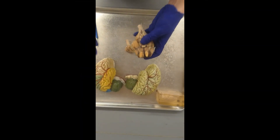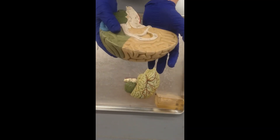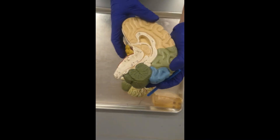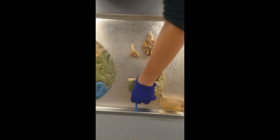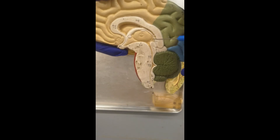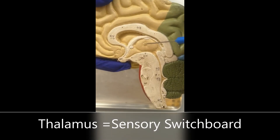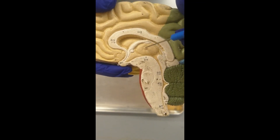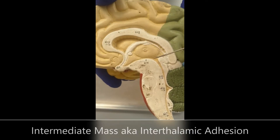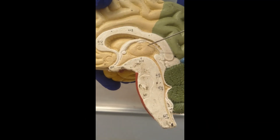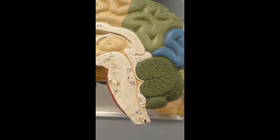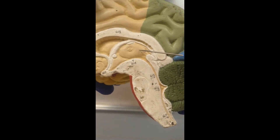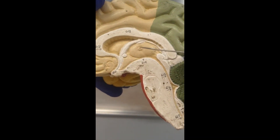That's the external structures of the diencephalon. For internal structures, we're going to look at the thalamus, the hypothalamus, and the epithalamus. The thalamus is this whole structure right here, and on it there's this little tiny dot — this actually connects the thalamus on both hemispheres. It's called the intermediate mass or interthalamic adhesion. The thalamus is like a sensory switchboard, relaying impulses traveling to and from the brainstem, spinal cord, cerebrum, and cerebellum.